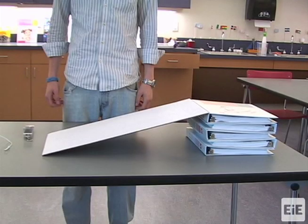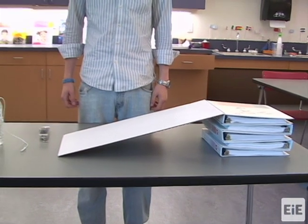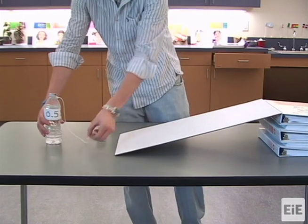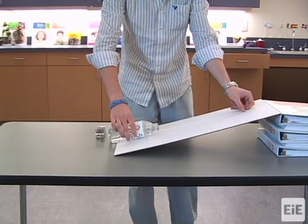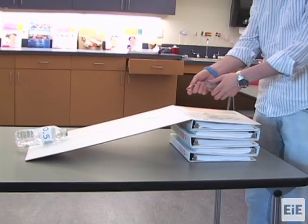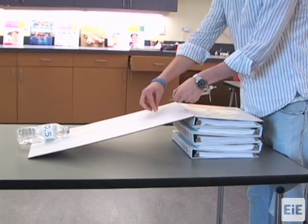The procedure for using both the long board and the short board inclined planes is the same. This video will demonstrate how to use the long board. Place the end of the water bottle load at the bottom of the plank. Hook the spring scale onto the load and let the spring scale rest near the stack of books or blocks.